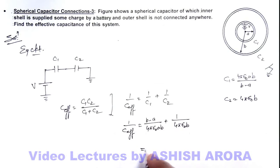On simplifying we are getting 1 by C effective is equal to, here we can take this 1 by 4π epsilon not b as LCM common. So this will be b minus a by a plus 1, and this giving us on simplifying b by a. It is 1 by 4π epsilon not a.